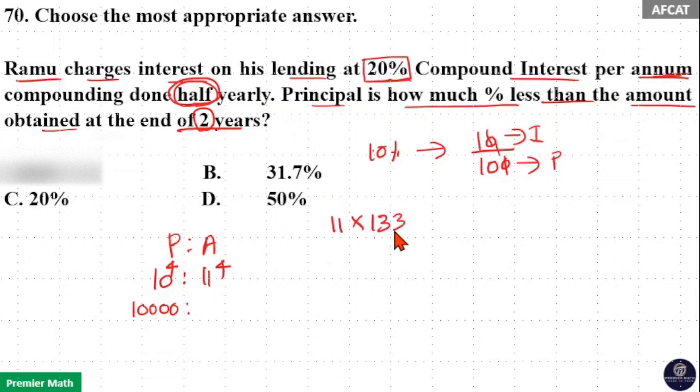So 1331 into 11 is 11 raise to 4. When you multiply a number with 11, write the unit digit of the number as it is. Now 3 plus 1 is 4, 3 plus 3 is 6, 3 plus 1 is 4. Now write the left hand side digit as it is. That is 14641 is 11 raise to 4.